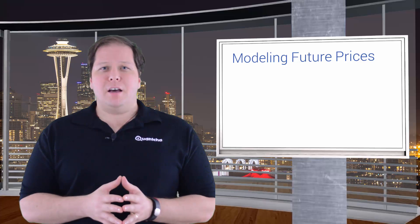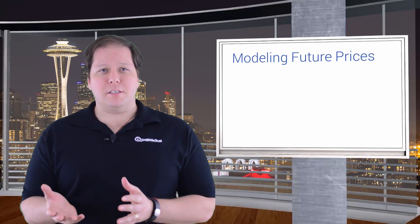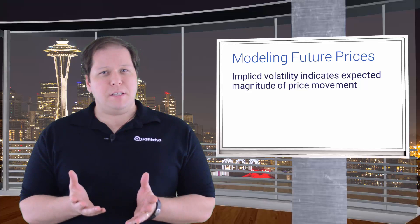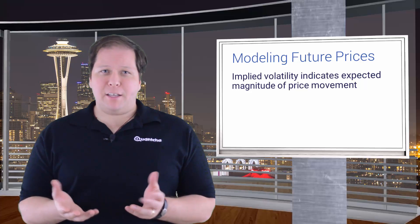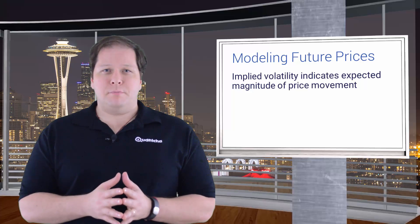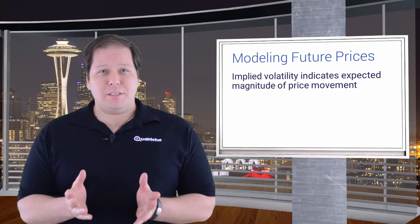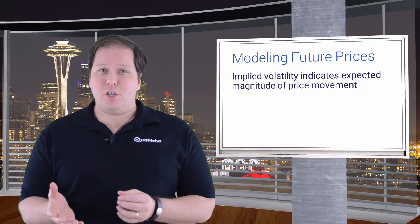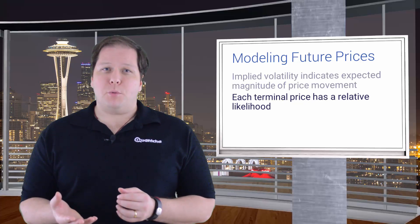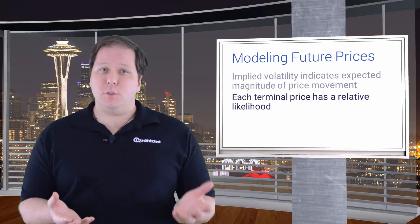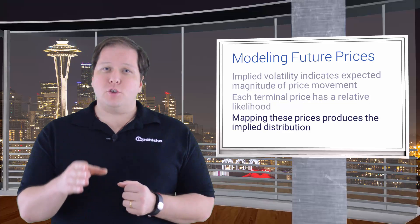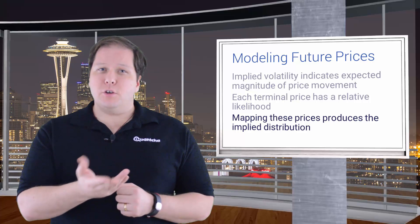The most important factor relied on to select probable future prices is the implied volatility of the underlying. Thanks to the implied volatility, we have accurate insight as to the relative magnitude the market anticipates the underlying to move over a given term. Since the implied volatility represents the standard deviation of the anticipated change, we can statistically calculate the likelihood of a given terminal price on that date relative to its peers. We can then use those relative probabilities to map out the implied distribution curve, which makes it easier to visually digest.